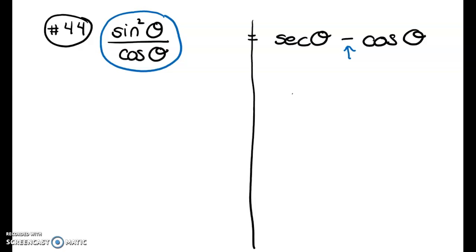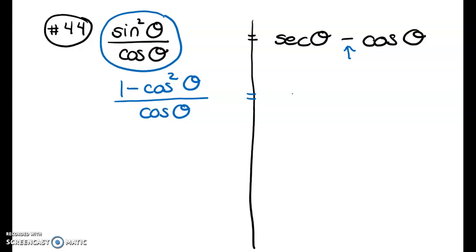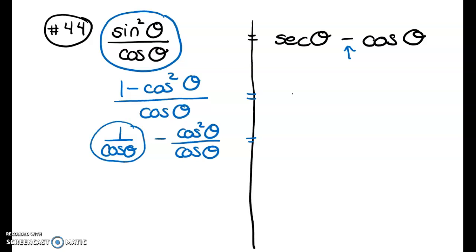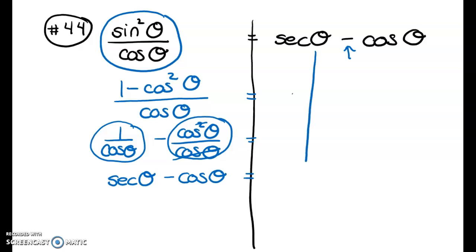Replacing sin²θ with 1 − cos²θ, I split the fraction into 1/cosθ − cos²θ/cosθ. Using the reciprocal identity, 1/cosθ is secant θ, and the other term reduces so one cosine cancels, leaving secant θ − cosine θ, which matches the right side exactly. Proof complete.